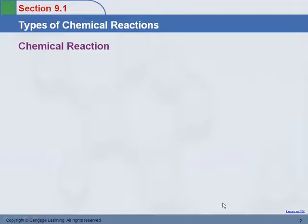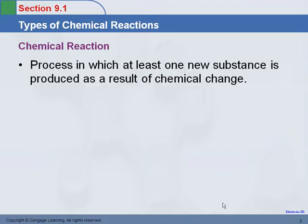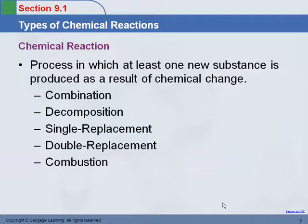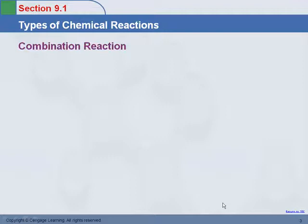A chemical reaction is a process in which you start with one type of substance and through the breaking and making of bonds and the rearrangement of atoms and elements, you produce a new substance. These are broadly classified into combination reactions, decomposition reactions, single replacement reactions, double replacement reactions, and combustion reactions.